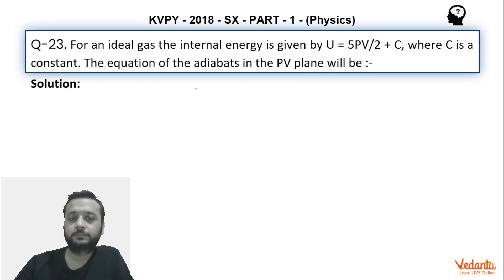Now for an adiabatic process we know that there is no heat exchange, right? Adiabatic process, which means dU is equals to minus dW because we can put dQ is equals to zero.